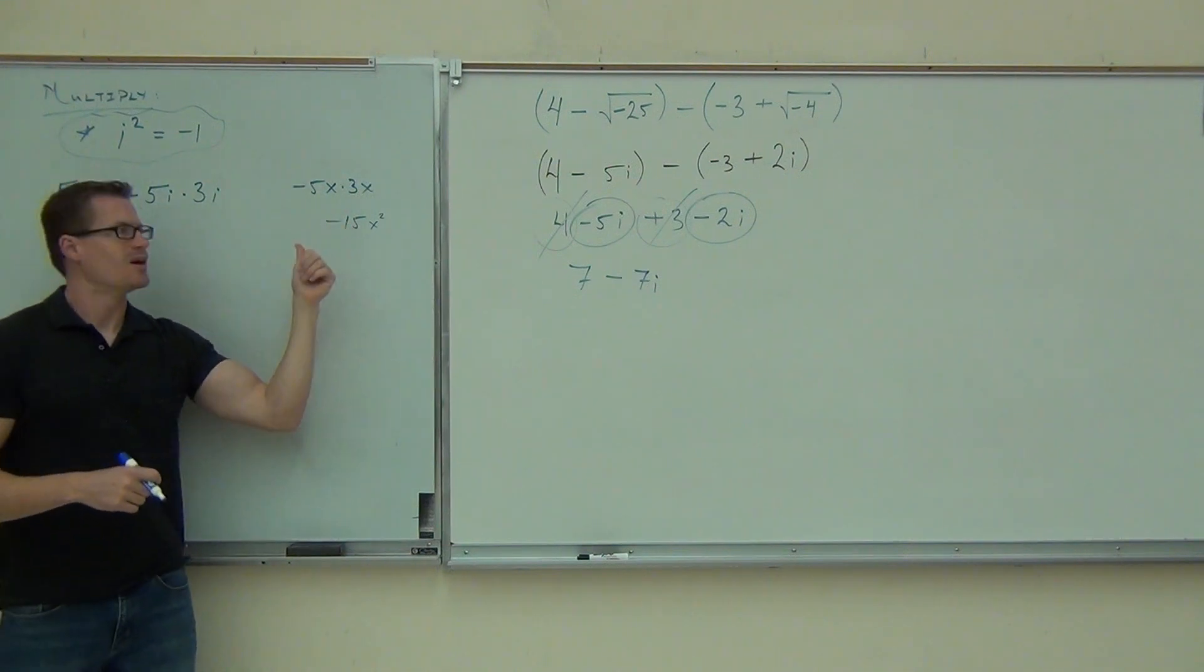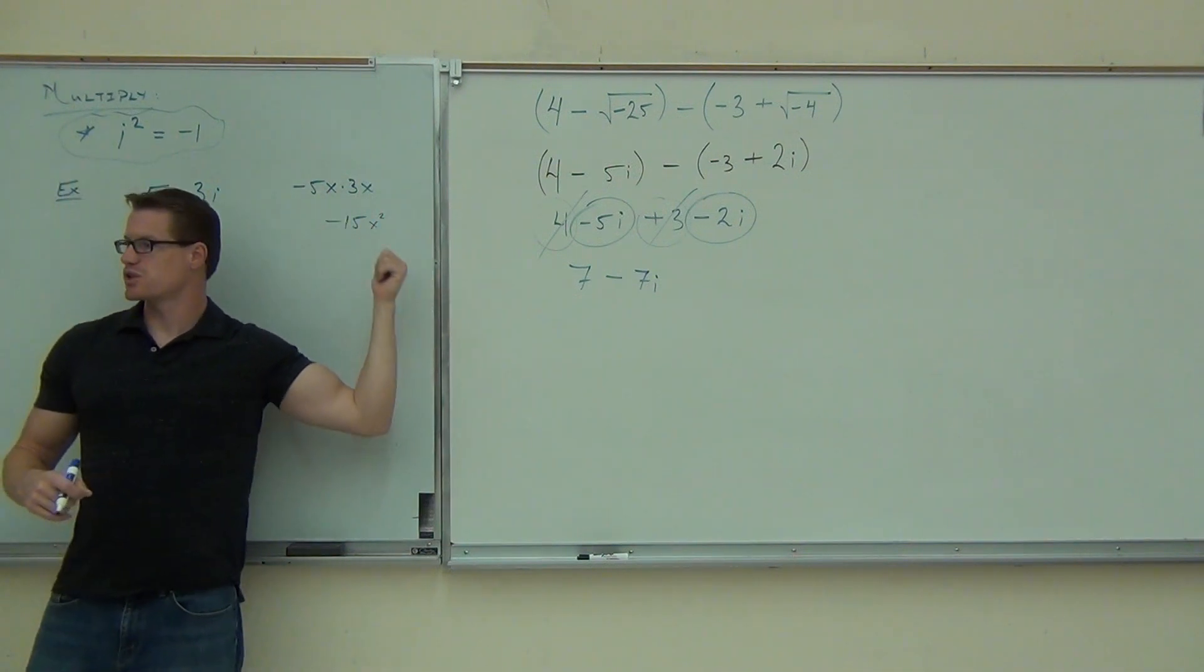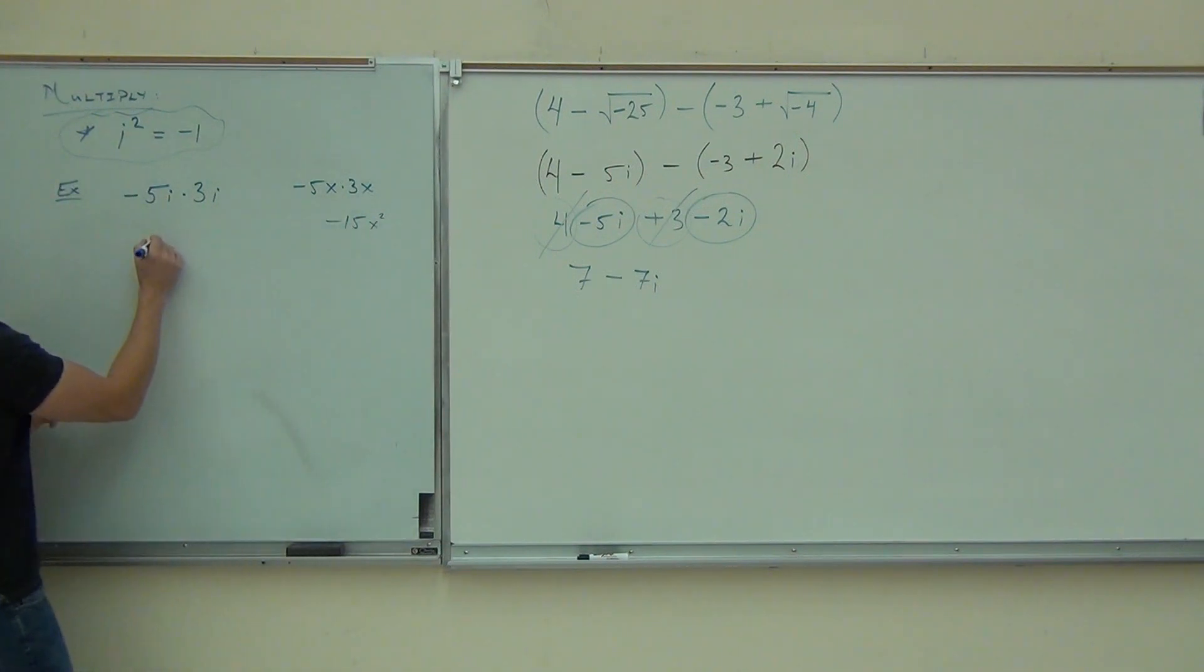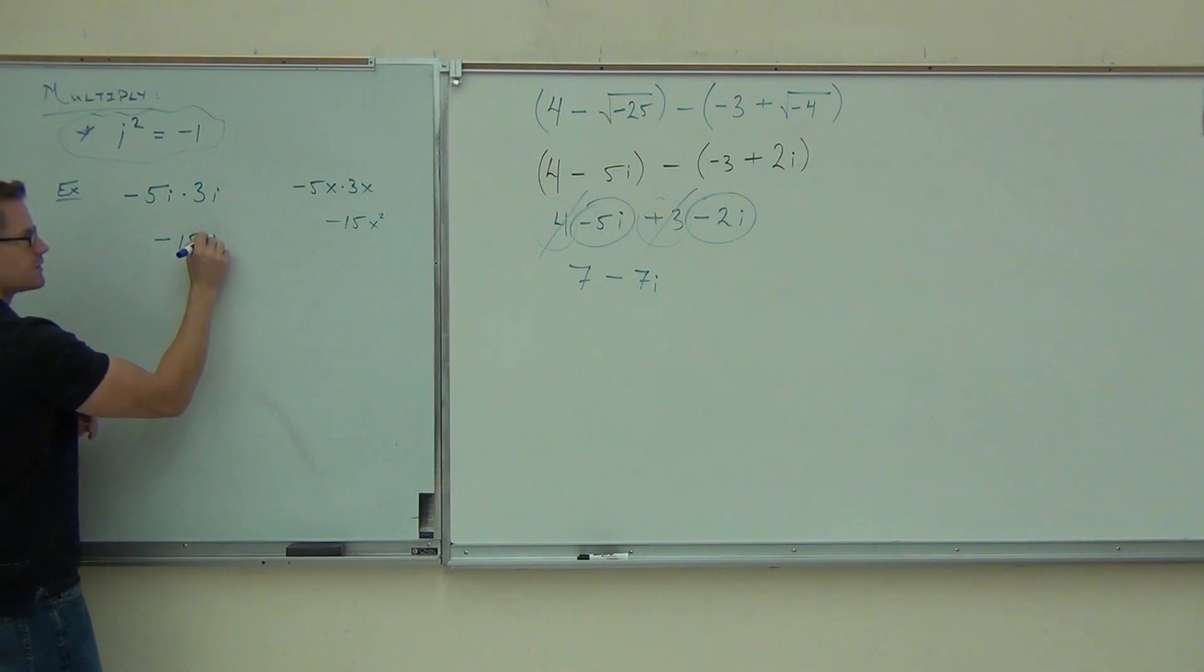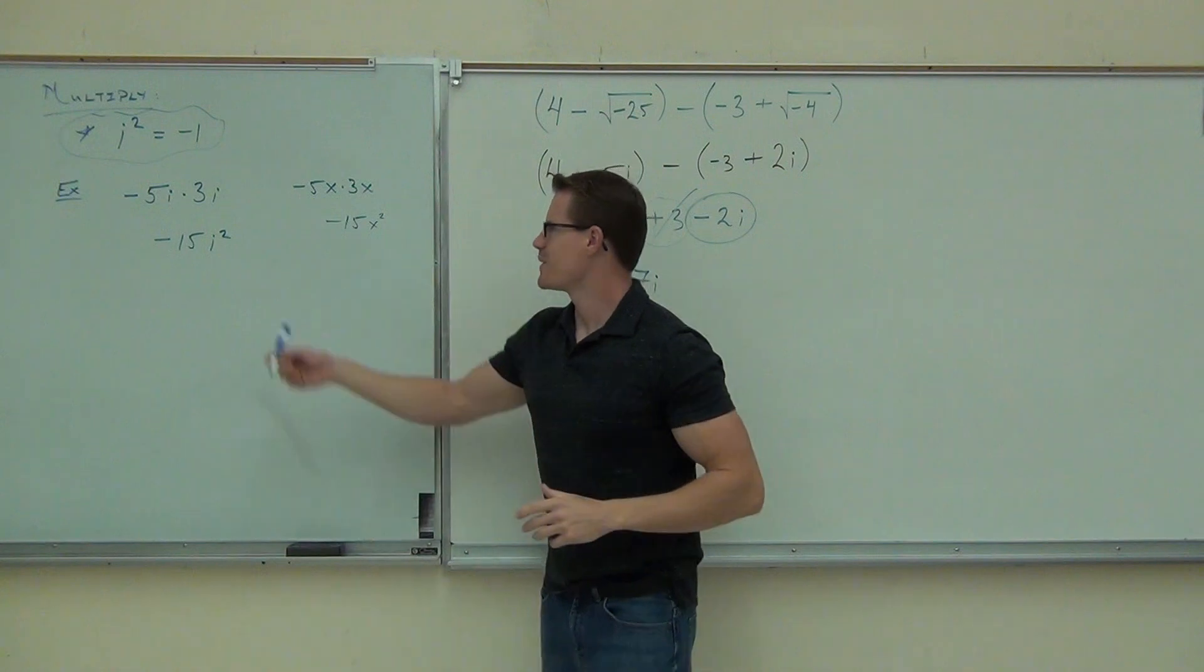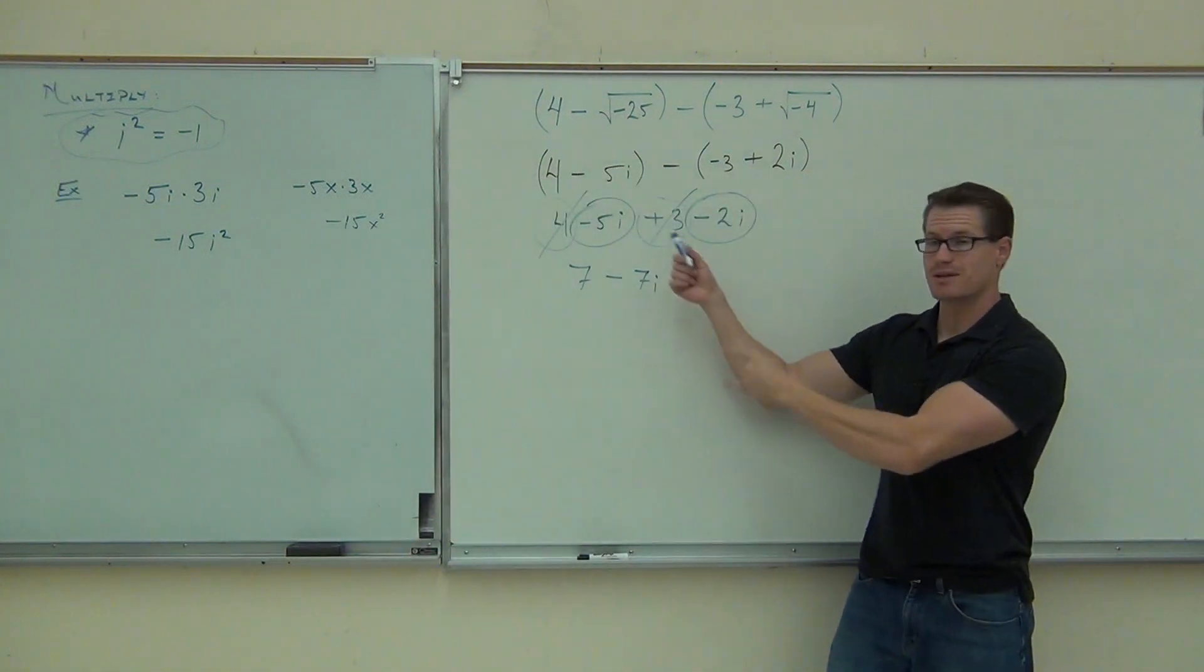Oh sorry, not x squared. We're going to get an i squared because we're multiplying just like we are right here. So where we got negative 15x squared, we'll get negative 15 i squared. Do you see where the i squared is coming from? Do you see why we have it here, but why we don't have it here?